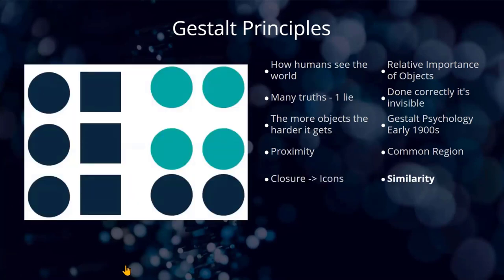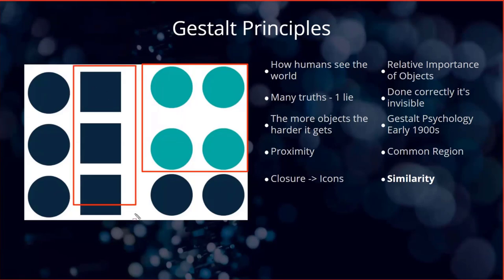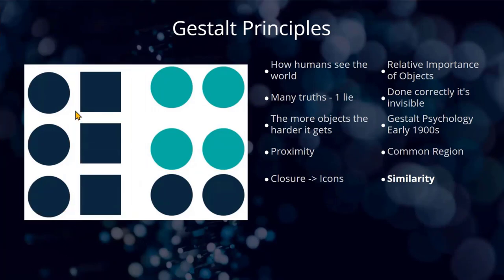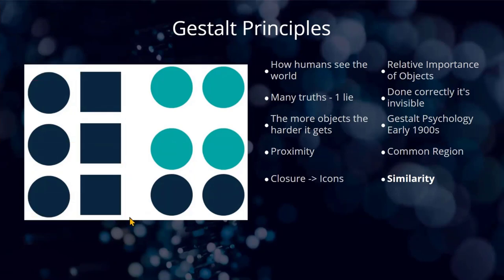Similarity is another important principle. Because objects are similar in colour or shape, we start to associate them with each other. We might think about this group as being similar, and this group, and this group as well. Remember that the proximity principle will also make us think things are similar — and it's okay if they really are. But here's the problem: if they aren't, that's when you've got a problem. You are sending messages to the people using your apps when you place objects on the screen.